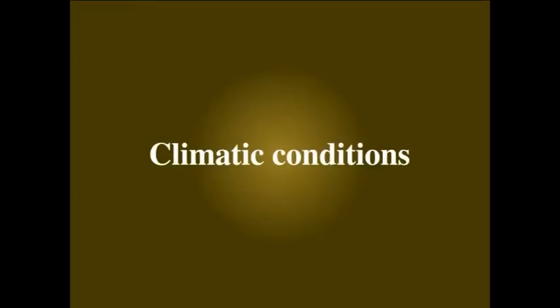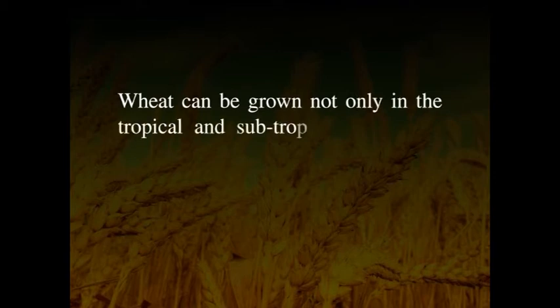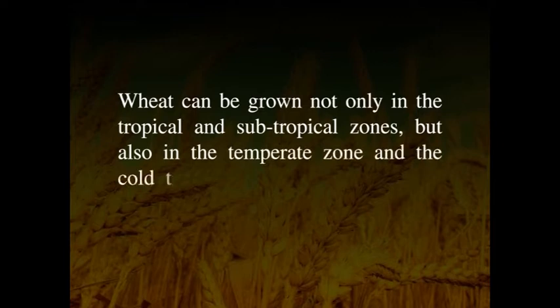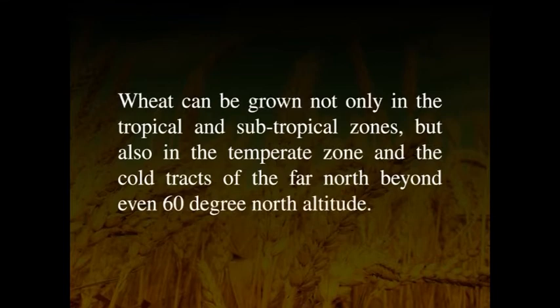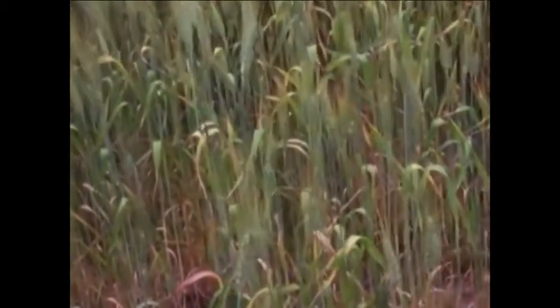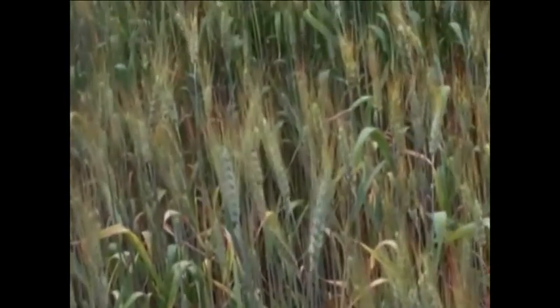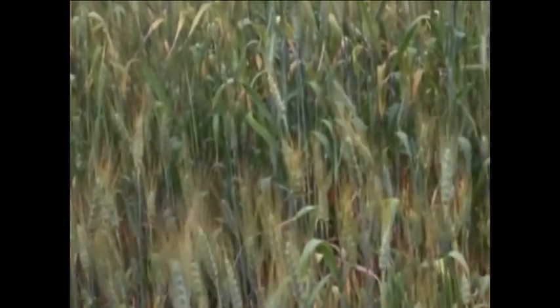Wheat crop has wide adaptability to different ranges of temperature. It can be grown not only in tropical and subtropical zones, but also in the temperate zone and cold tracks of the far north beyond 60 degrees north latitude. Wheat can tolerate severe cold and snow and resume growth with the settling of warm weather in spring. The best wheats are produced in areas with cool, moist weather during most of the growing period, followed by dry, warm weather to enable the grain to ripen properly. Areas with warm and damp climate are not suited for wheat growing. During heading and flowering stages, excessively high or low temperatures and drought are harmful.